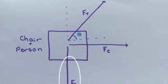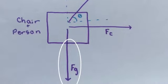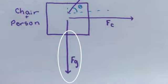Referring back to the free body diagram, the only force that is acting on the chair and person is the force of gravity, or Fg, which is equal to mass times the acceleration due to gravity on Earth, which is negative 9.80 meters per second squared.